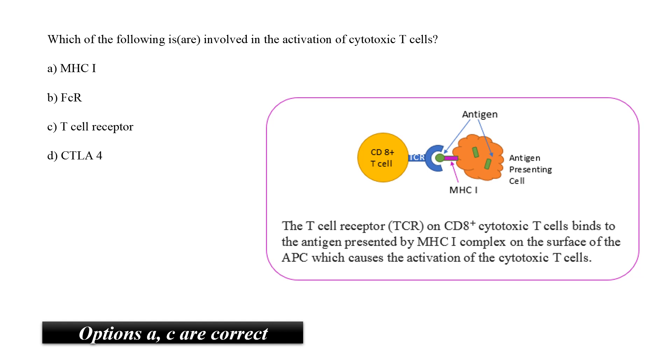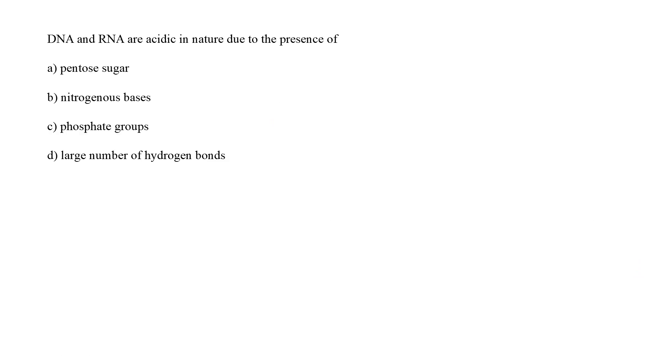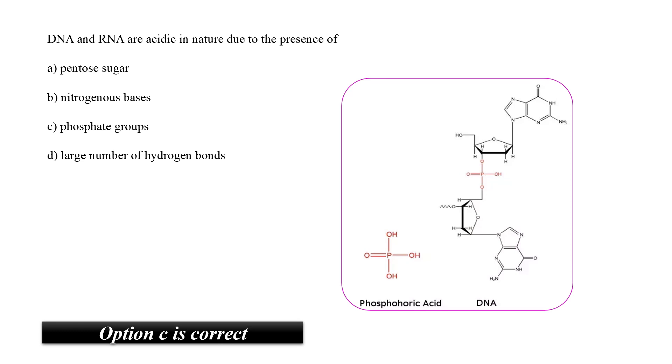Moving on to the next question. DNA and RNA are acidic in nature due to the presence of DNA and RNA are called as nucleic acids because of the acidic nature of phosphate group attached to them since they can easily lose a proton. Option C, therefore, is the right answer.